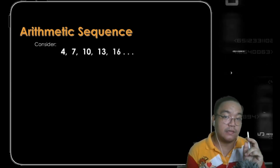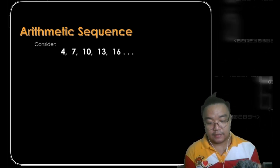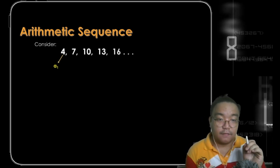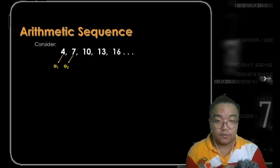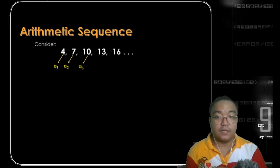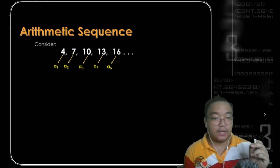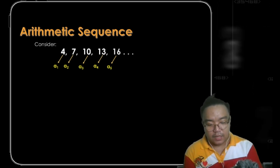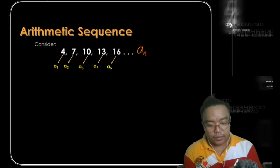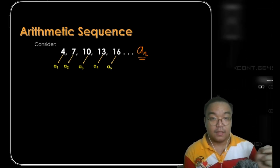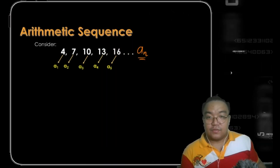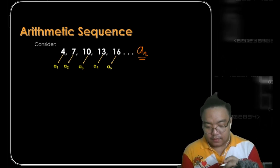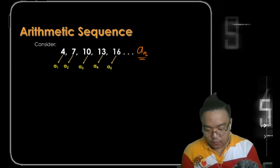We represent the first term as a sub 1. The second term is a sub 2, the third is a sub 3, the fourth is a sub 4, the fifth is a sub 5, and so on until we reach the term we call a sub n. A sub n is the nth term.